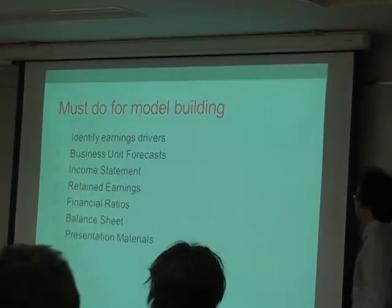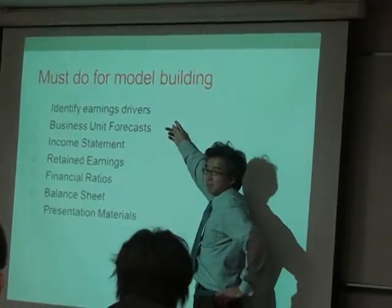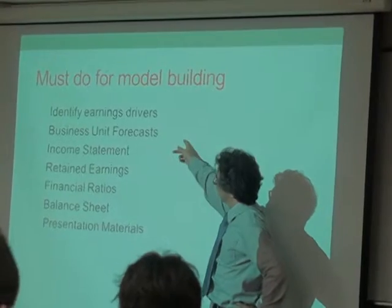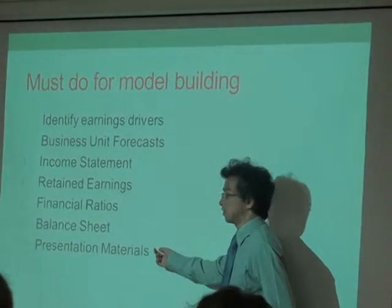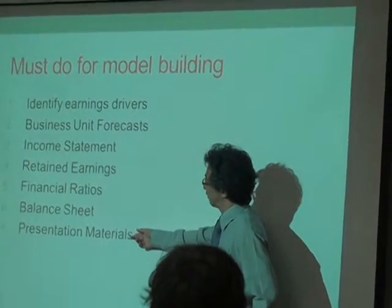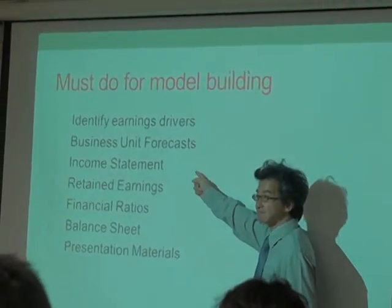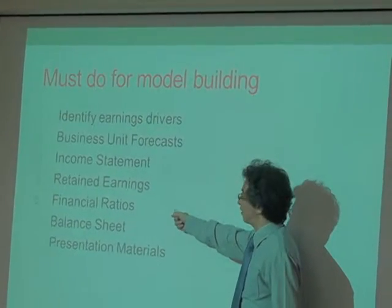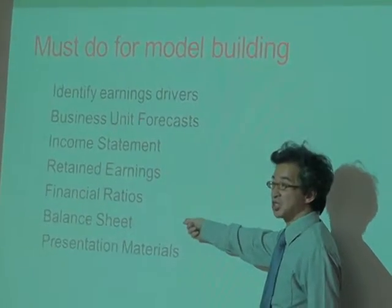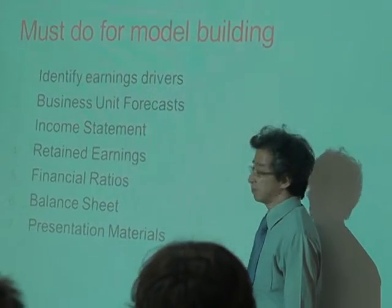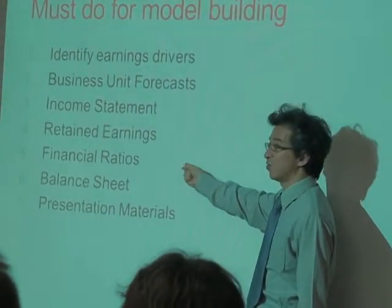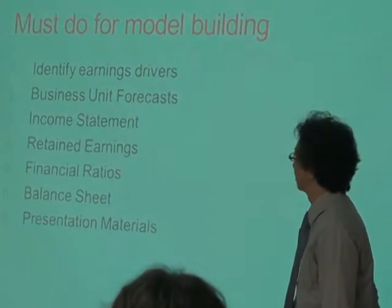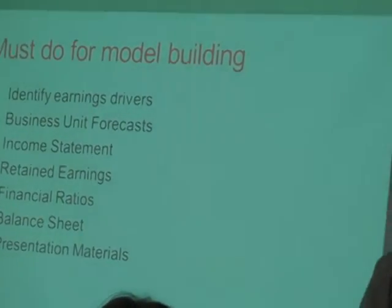We'll talk about this for about 20 minutes with a real exercise. For model building, most of you have done identifying earnings drivers. Based on that, you have to make a business forecast. The order is: first make an income statement, then retained earnings, then financial ratios, then balance sheet, and finally the presentation. Don't do the balance sheet first — you have to make the income statement first.